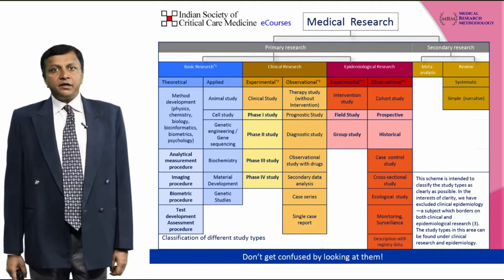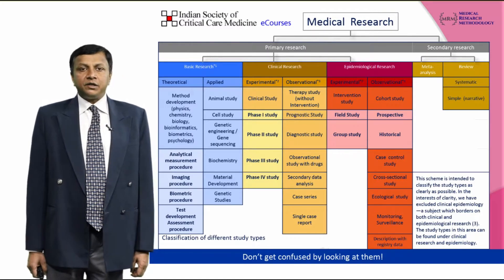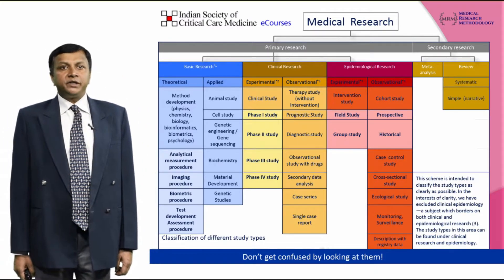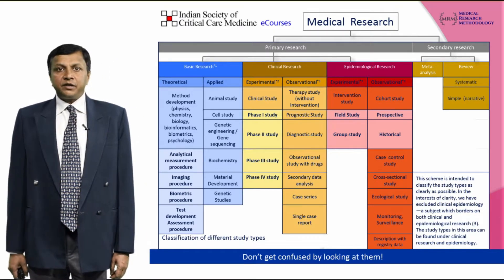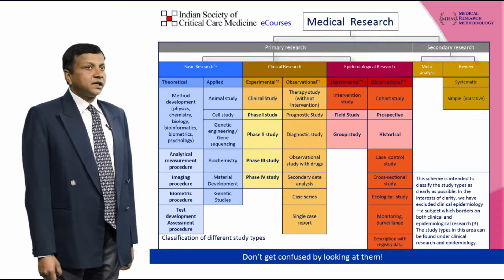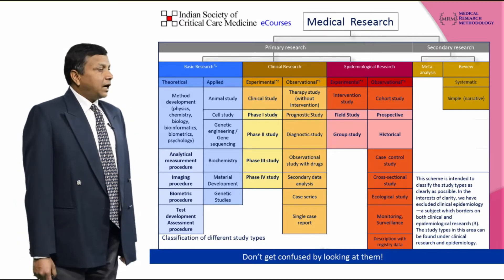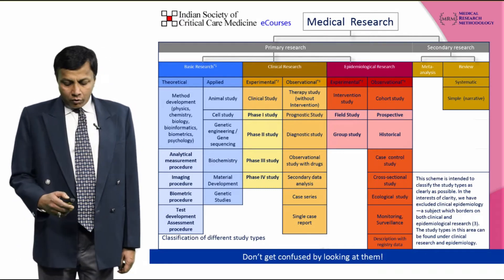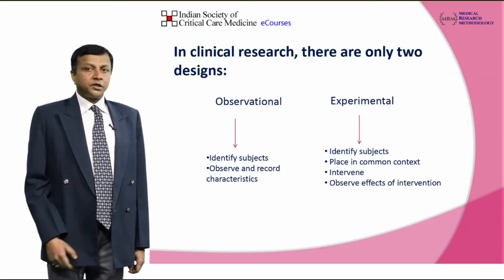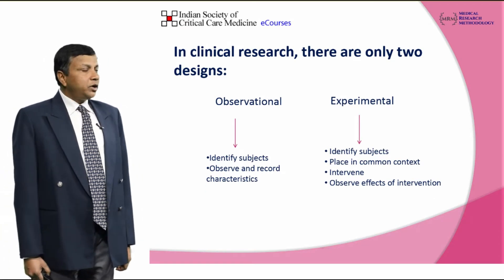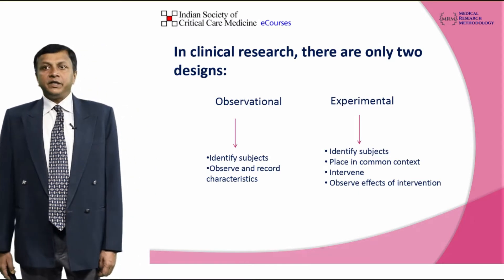If you go into any standard textbook of medical research, you will find that studies have been classified into different subtypes based upon their designs. You can see classifications into primary and secondary research, further subclassified into basic science, clinical research, epidemiological research, and so on. But do not get confused by these classifications, because to an ordinary researcher in clinical research there are only two designs — one is observational, and two is experimental.